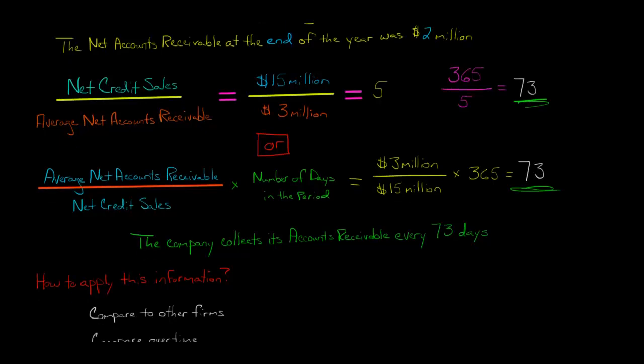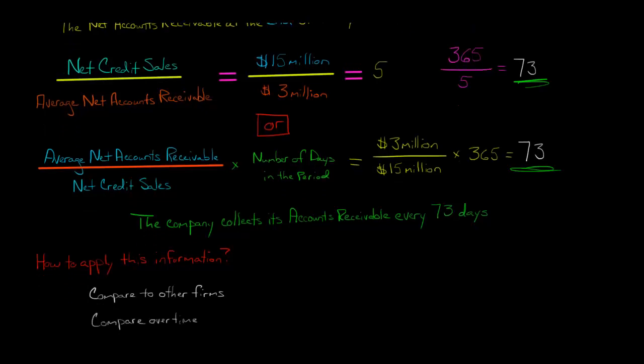What do we do with this information? Once we know this, we can compare it to other companies in the same industry and say, if it takes us 73 days to collect, and we look at other companies, it's only taking them 60 or 55 days to collect, we say, what is it that we're doing wrong here? What is it that's different about our business models?